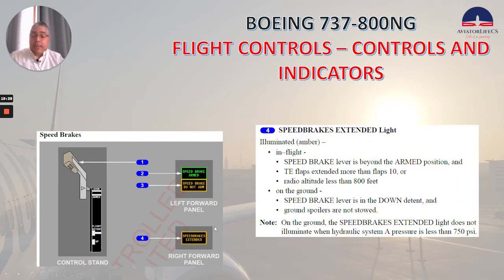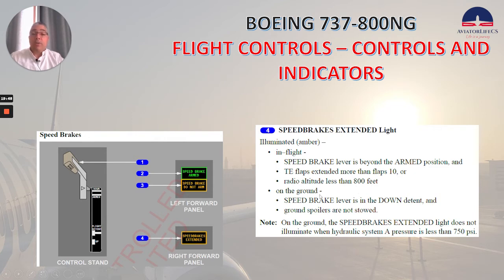Now we have the speed brakes extended light in the right forward panel. Illuminated amber in-flight when the speed brake lever is beyond the arm position and trailing edge flaps are extended more than flaps 10, or radio altitude is less than 800 feet. On the ground, illuminated amber when the speed brake lever is in the down detent and ground spoilers are not stowed. Note: on the ground, the speed brakes extended light does not illuminate when hydraulic system A pressure is less than 750 psi.